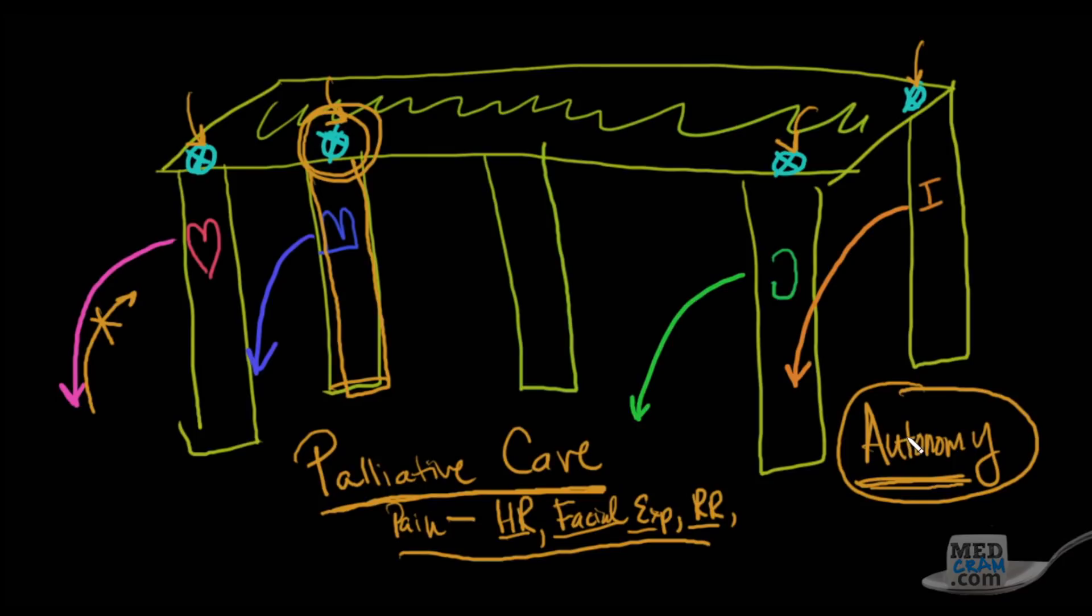And the family needs to bring, and the patient themselves if they can, need to bring information to the healthcare decision makers about what the values are of the patient, what they would have wanted, given those set of prognosis. And then together, both family and the professional need to come up with a decision about what the direction is for the patient.